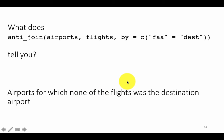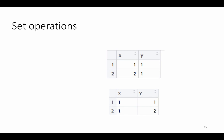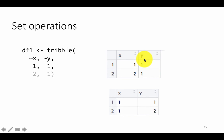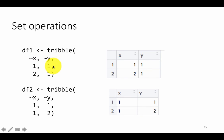In an anti-join, the order of tables matters a lot. Now, just like the join operations we've been performing, sometimes using set operations is very useful. We're creating two trial tables: df1 has rows (1,1) and (2,1), and df2 has rows (1,1), (2,1), and (1,2).